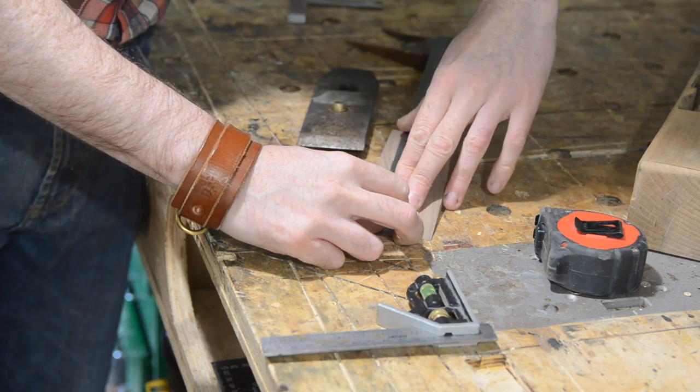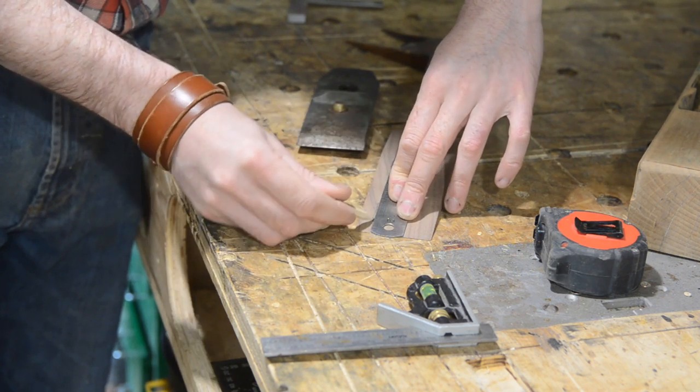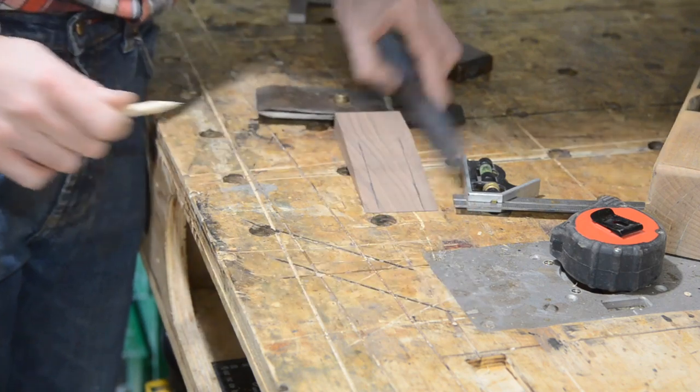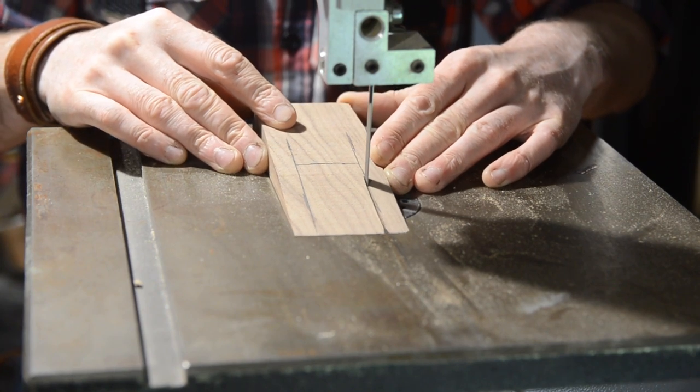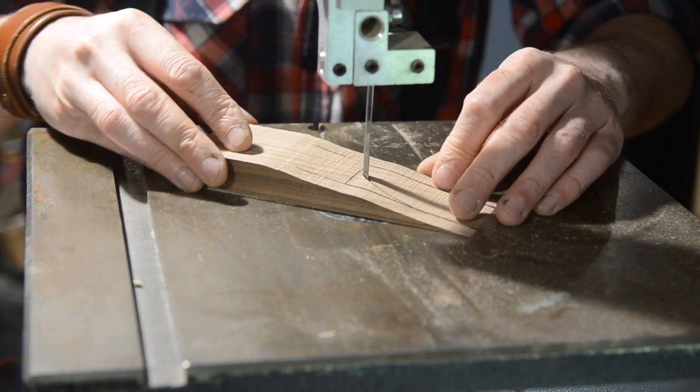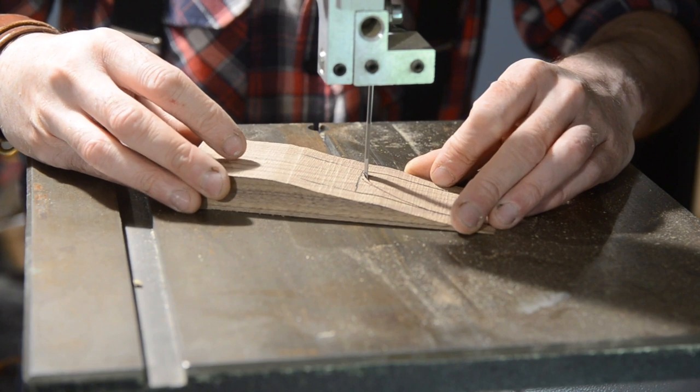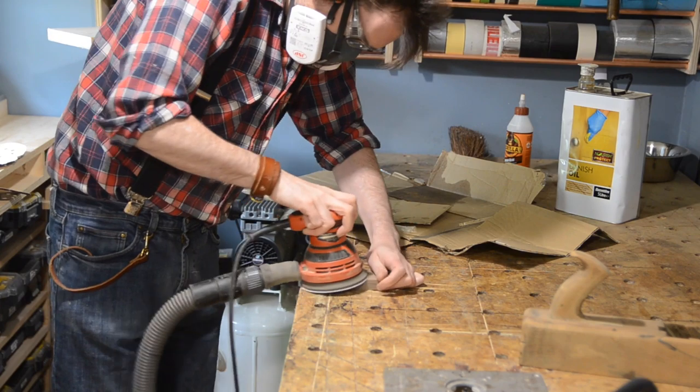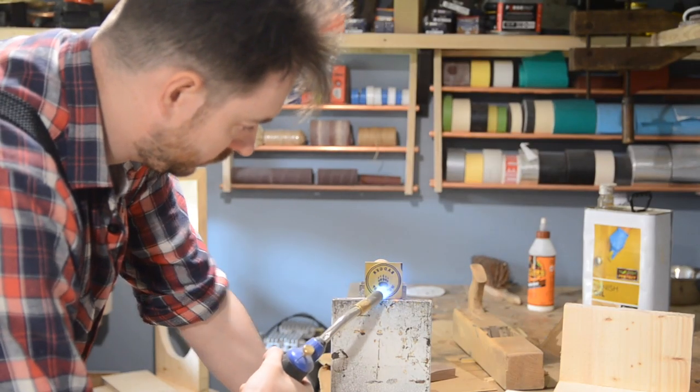This wedge goes on top of the iron and the chip breaker and they have a bolt going through them so this wedge needs to accommodate it. So I mark out the material that needs to be removed then I can take it back to the bandsaw and get it cut out.